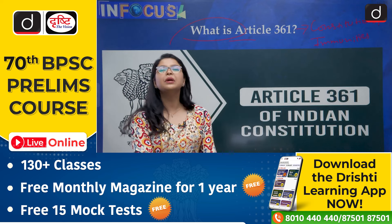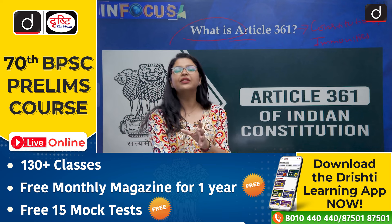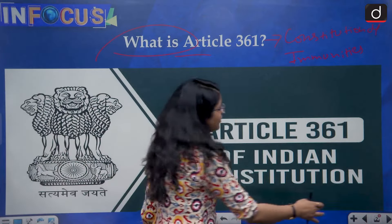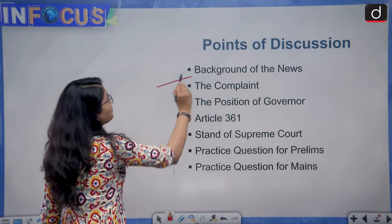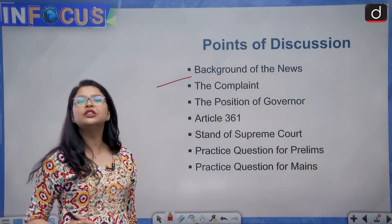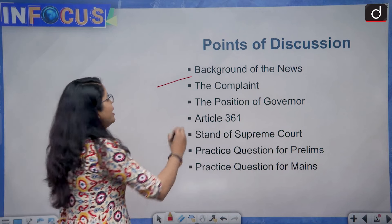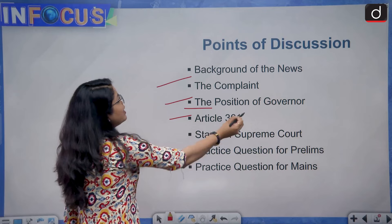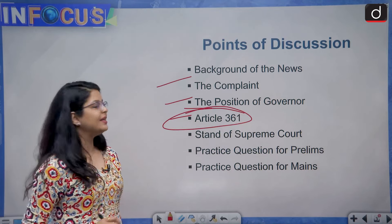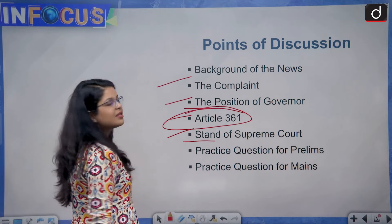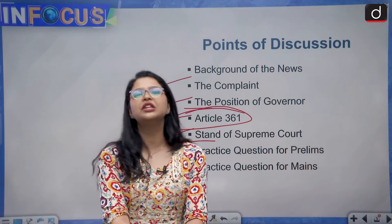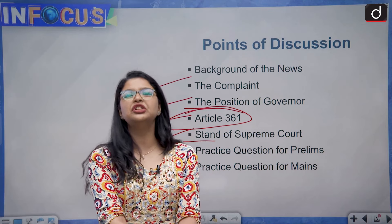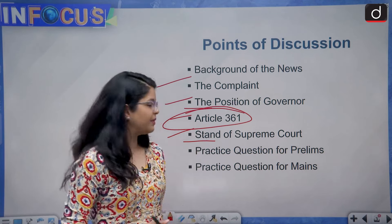These constitutional immunities are available to the president of India or a governor of the state. In this discussion, we are firstly going to study about the recent complaint initiated against the West Bengal governor. Then we will examine the constitutional provision of governor, study Article 361 in detail, analyze the stand of the Supreme Court, and finally discuss practice questions for your prelims and mains examinations.